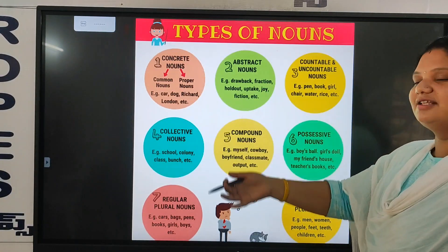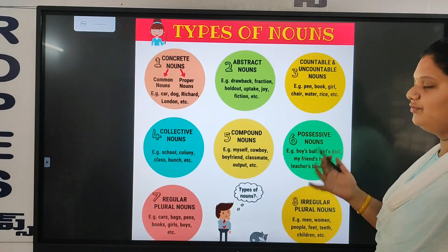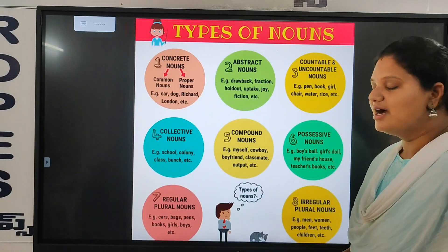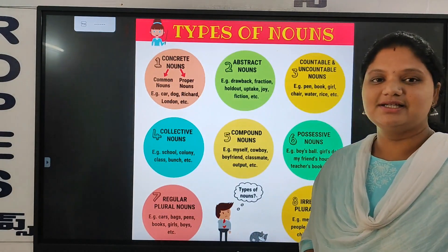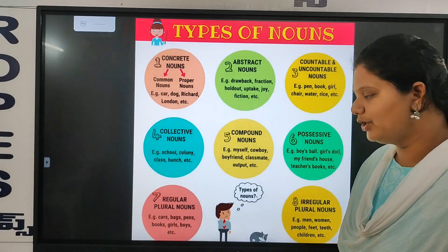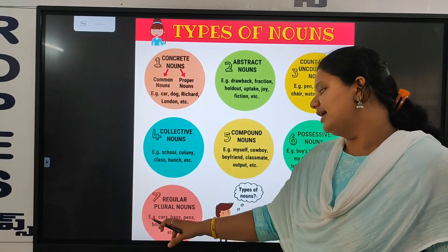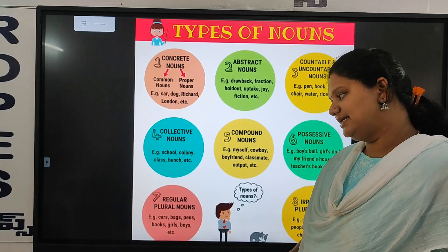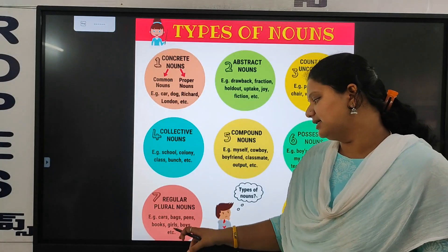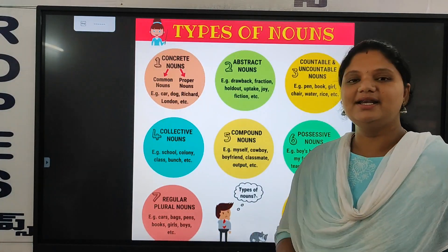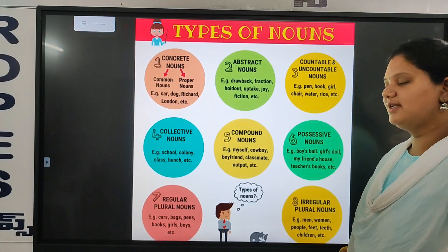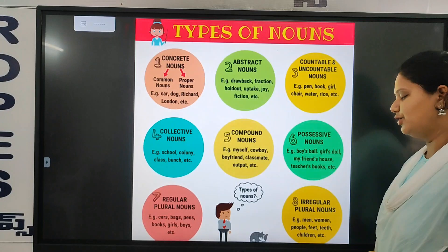Next one is regular plural nouns. Regular plural nouns are: cars, bags, parents, books, girls, boys, and so on. We consider all of these as regular plural nouns.